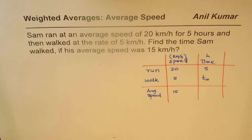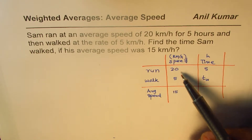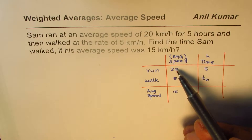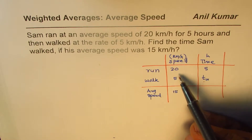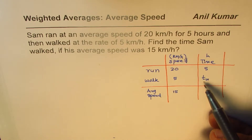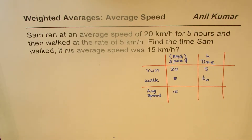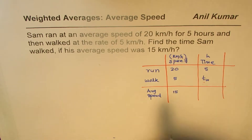Now, this overall speed is the weighted speed — it is not just the average of these two. You cannot simply add 20 and 5 to get 25 and divide by 2. Dividing these two speeds by two gives a wrong result, because the time for walking and for running is not the same. The average is 15, not 12.5, which clearly indicates unequal times. That is where the weighted average comes into picture.